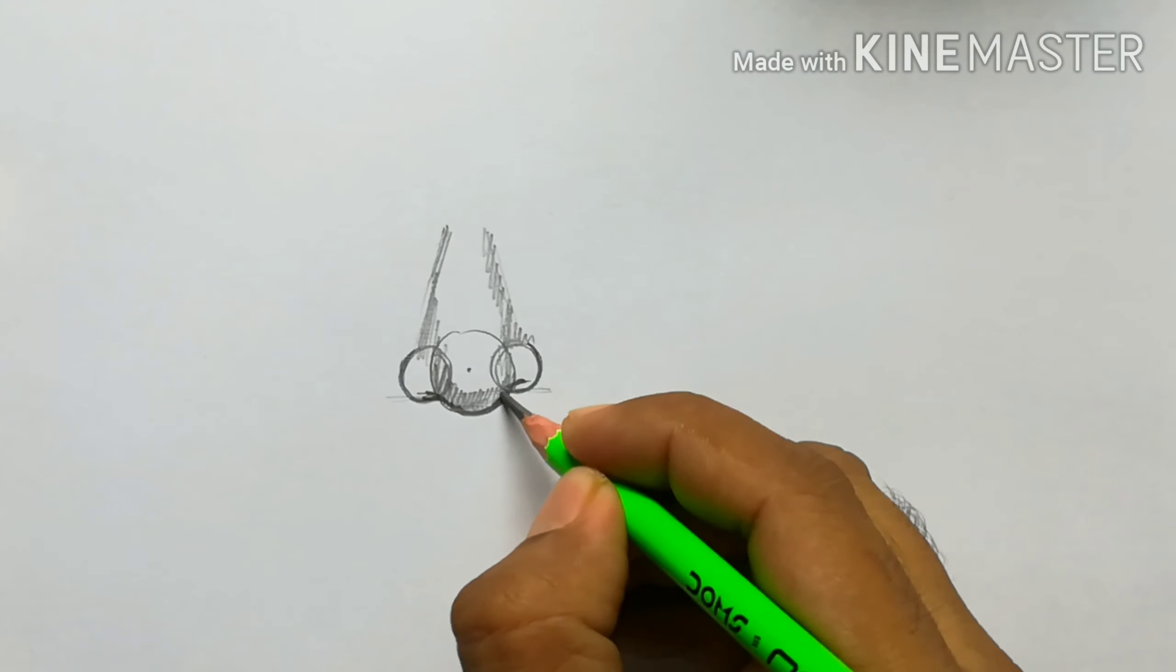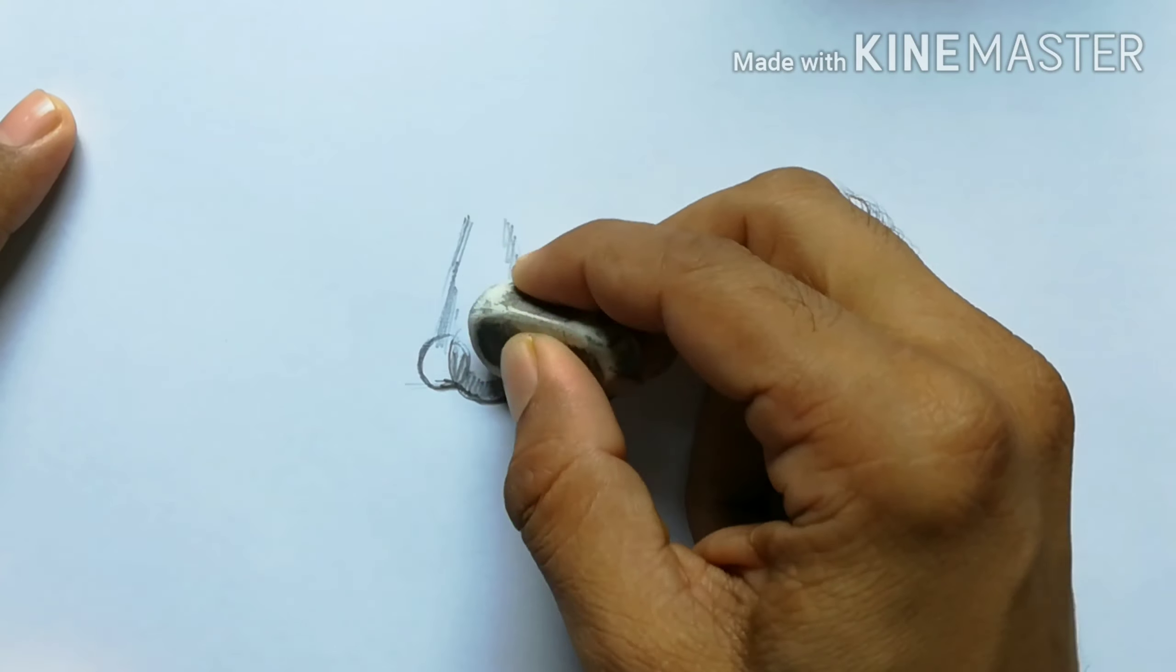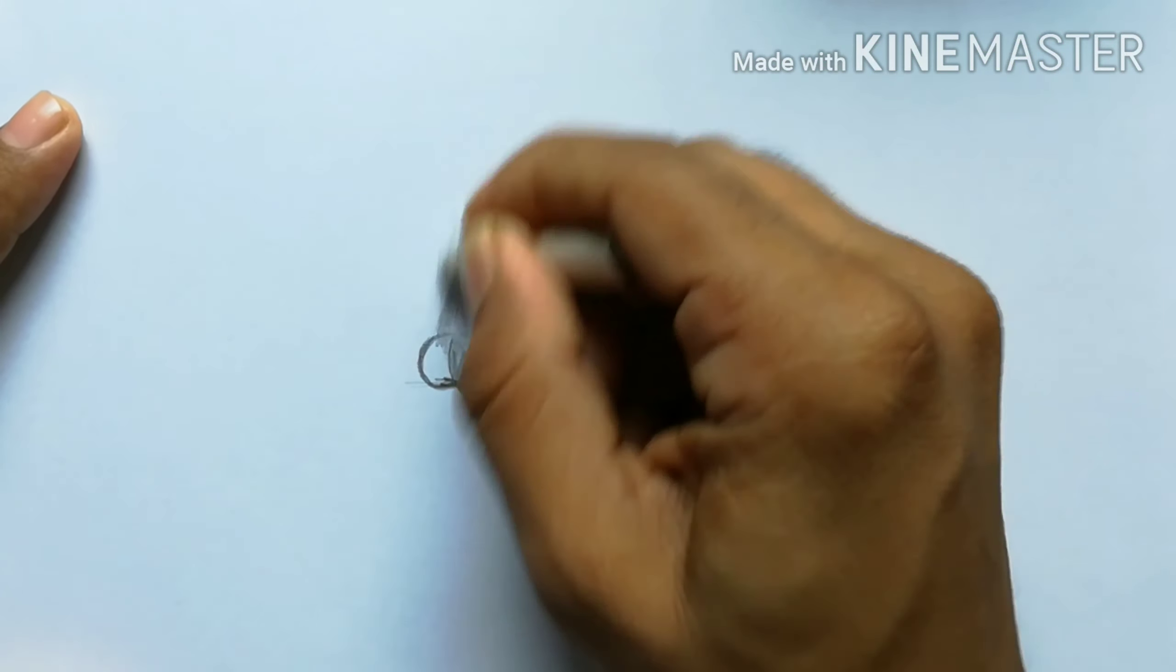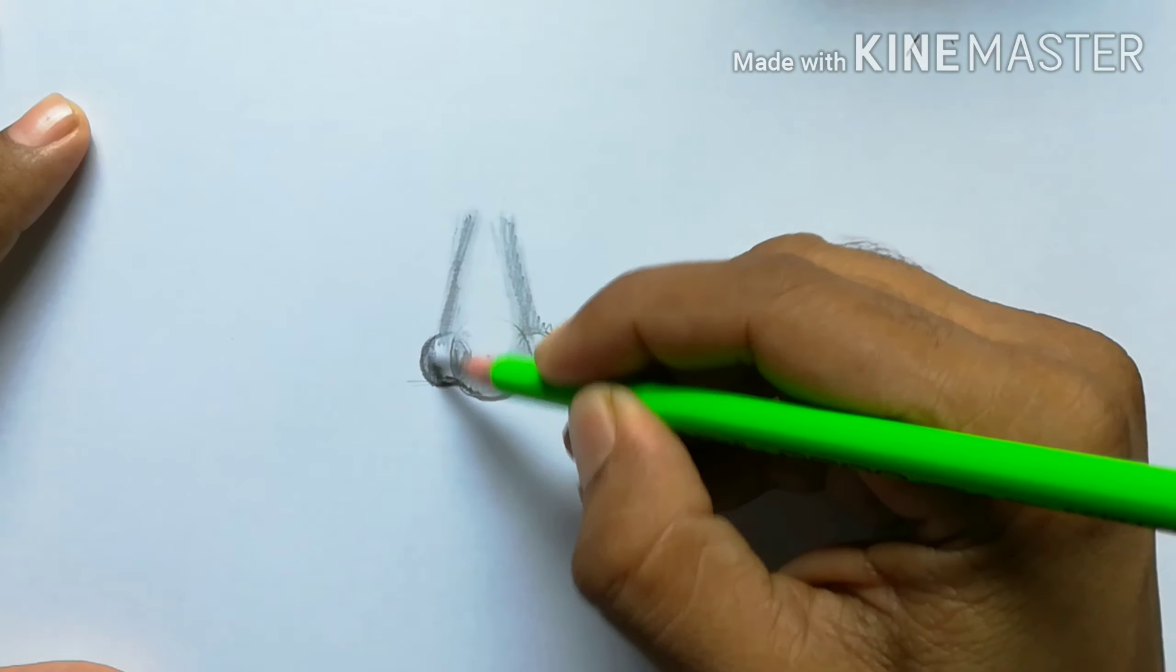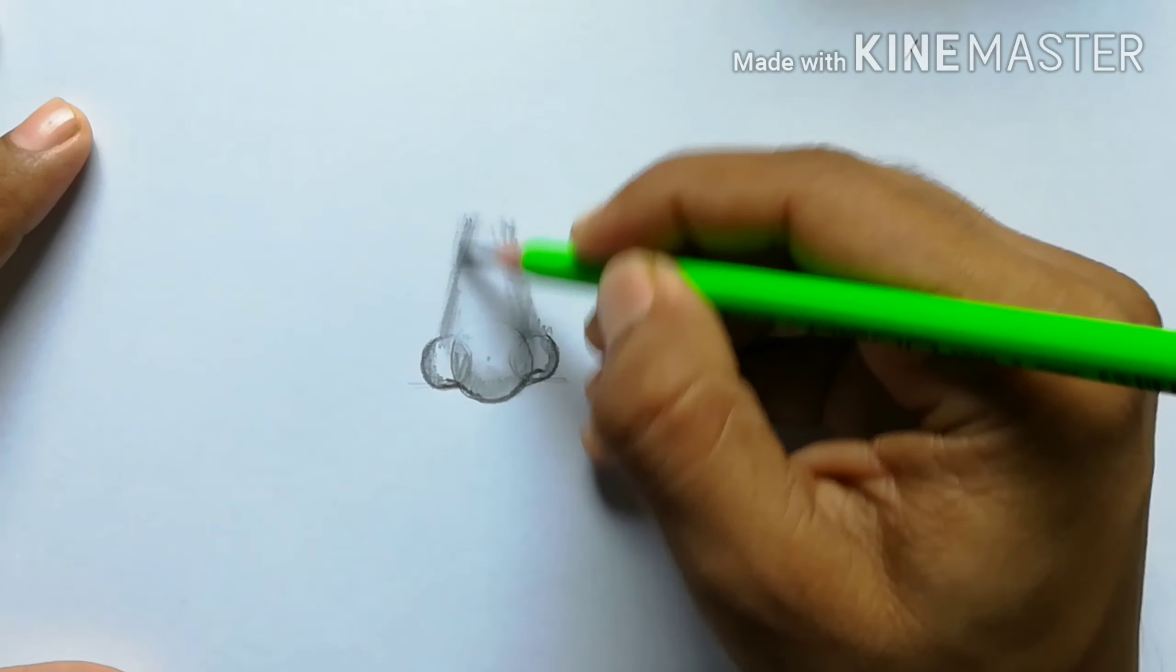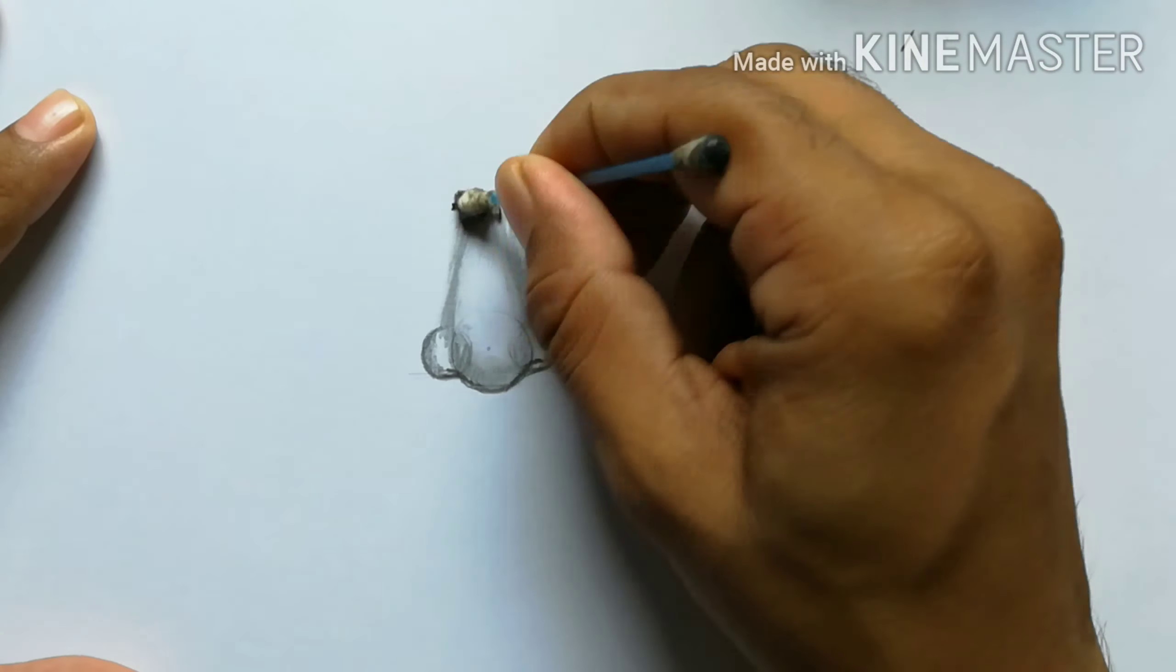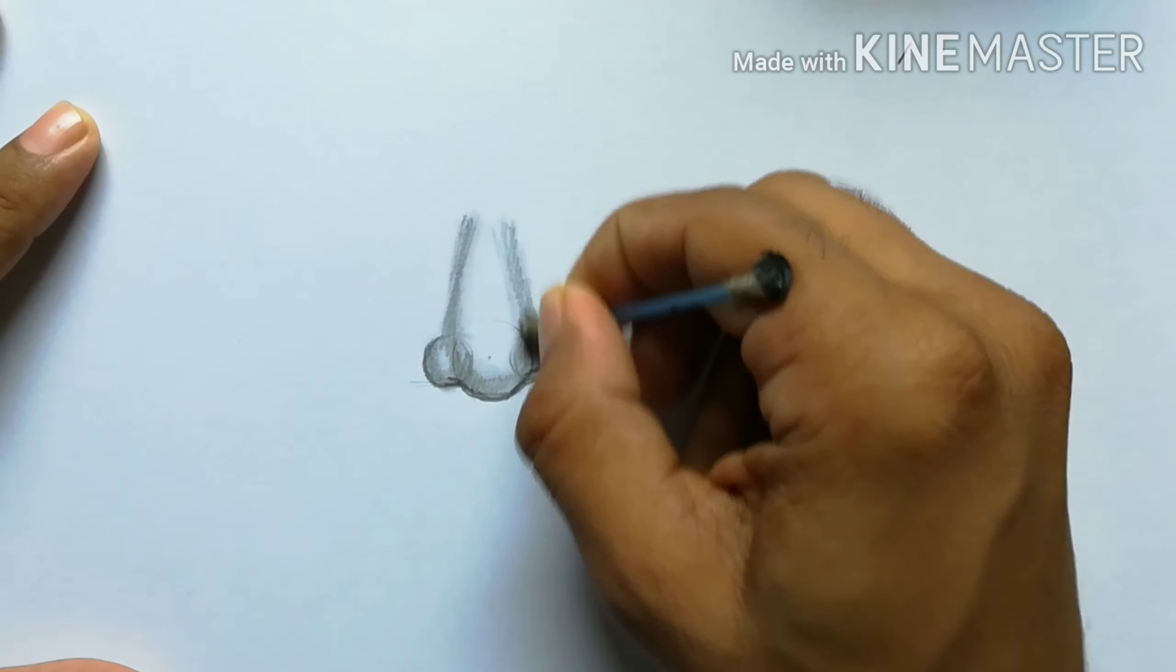And then we have to erase the unnecessary lines. Now the process of shading begins. To put darker and lighter shades in the correct places, you need a lot of practice. This can only be developed with time, with practice.